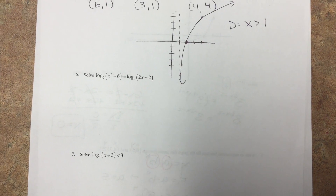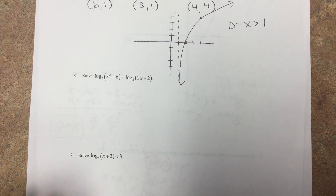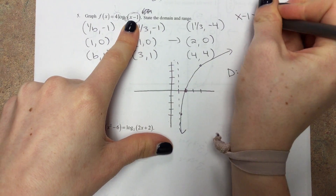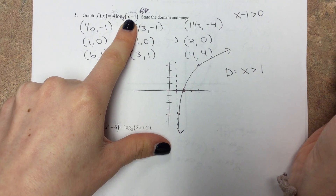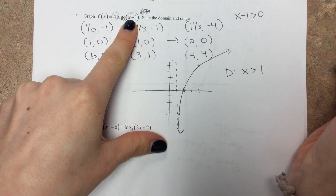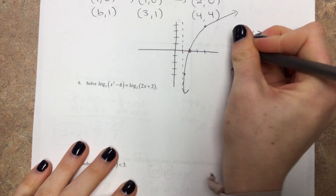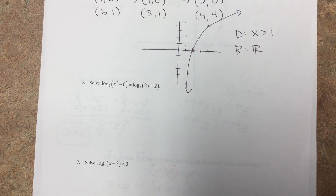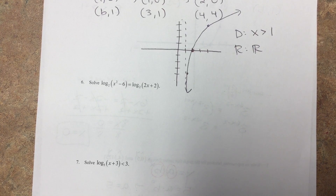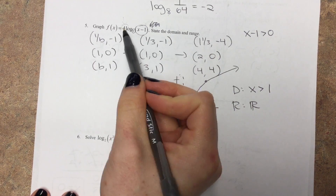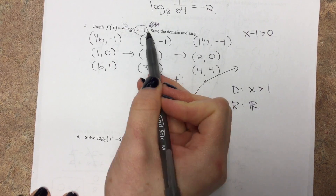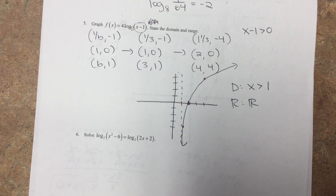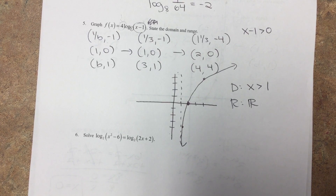Technically, what's happening is recognizing that the argument inside the log has to be positive. So x minus one has to be positive, and if you add one to both sides, you get x is greater than one. The range for logarithmic functions is always all reals — every single time. And note: only if stuff is in parentheses does it affect x. Otherwise, a plus or minus on the outside is a vertical shift affecting y.